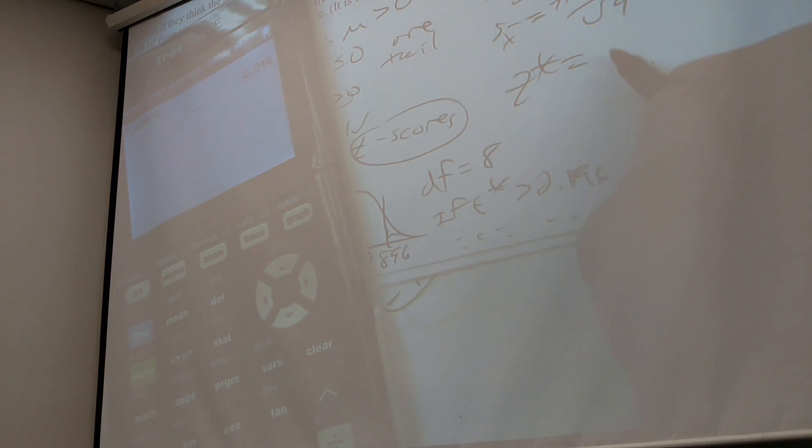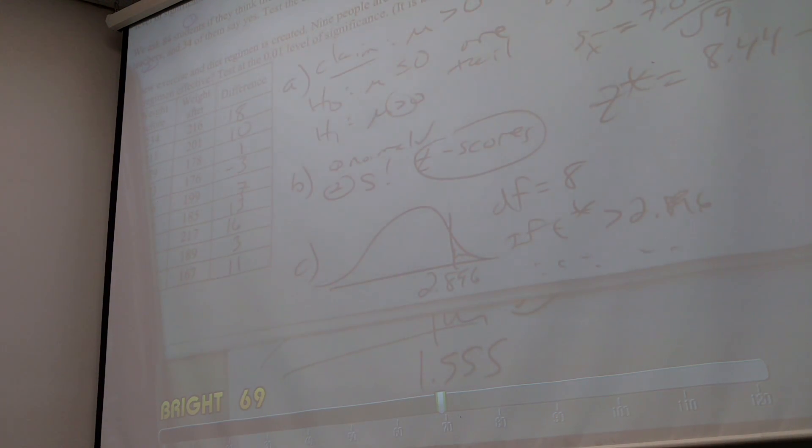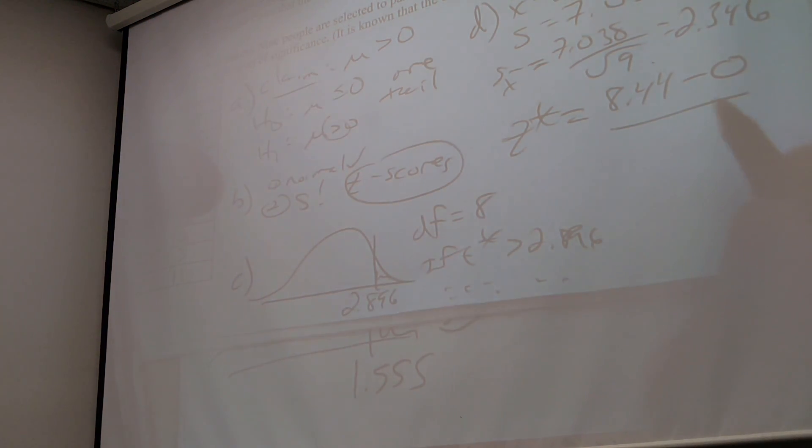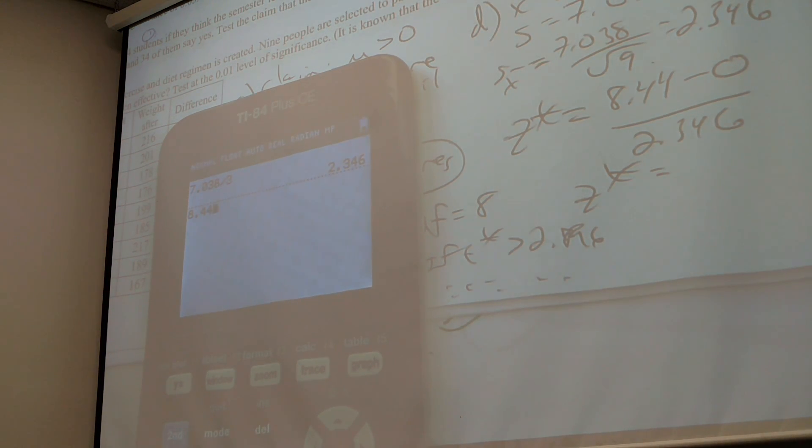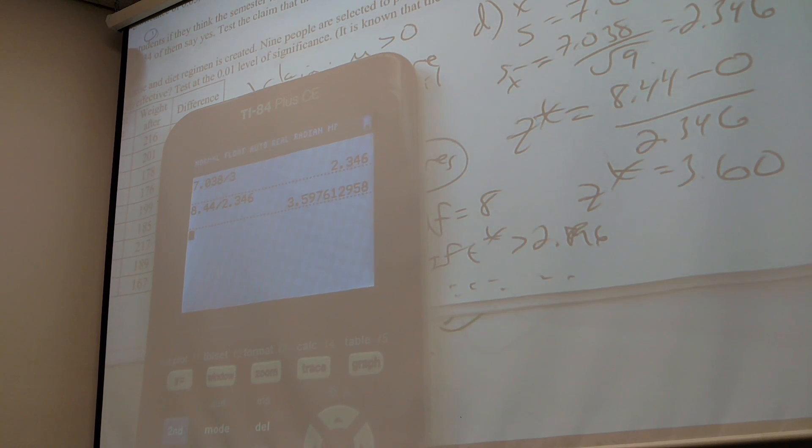So T star would be, what's my mean? 8.44 minus what? Holy crap. Zero. That's what I'm trying. I'm trying to see if it's different from zero. Is it different from zero enough? Divided by 2.346? So I got 3.60.